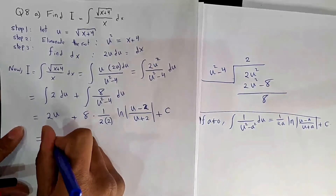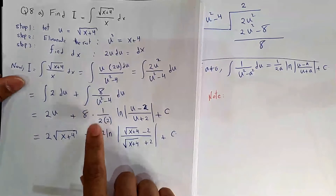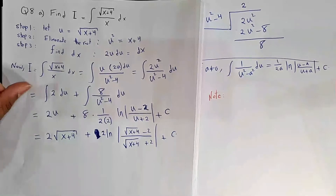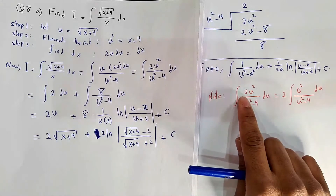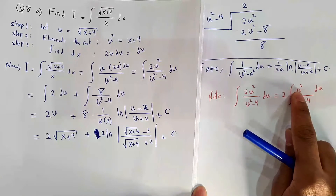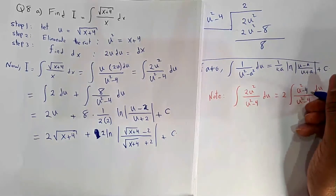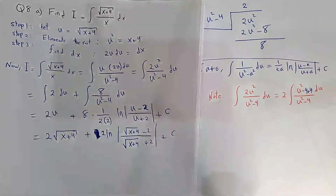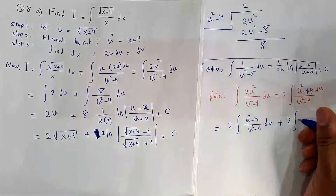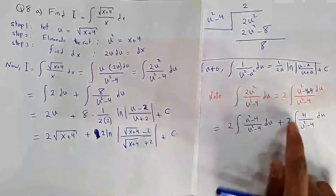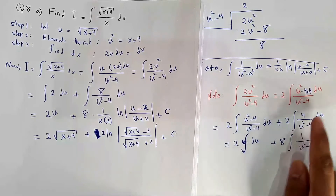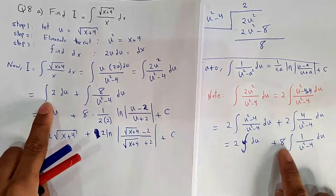Simplifying: 8/4 = 2, and substituting u = √(x+4) back gives the final answer. There is also an alternative method: instead of long division, write 2u²/(u²−4) by adding and subtracting 4 in the numerator as (u²−4+4)/(u²−4). Distributing the 2 gives the integral of 2 du plus 8 times the integral of 1/(u²−4) du — giving the same answer.